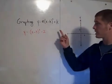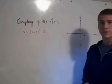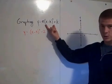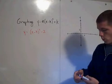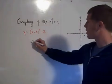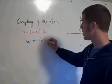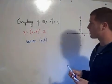Here we have a quadratic equation in vertex form. Vertex form is y equals a times the quantity x minus h squared plus k, where the point h, k is the vertex.